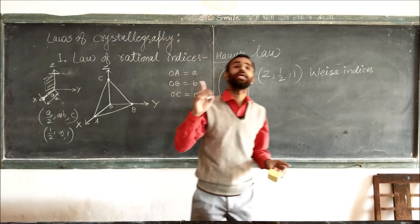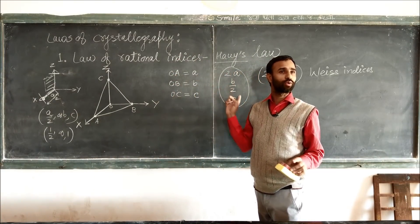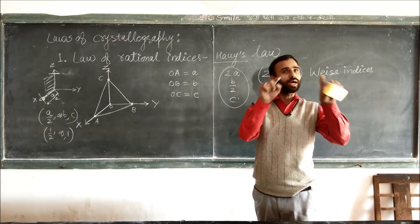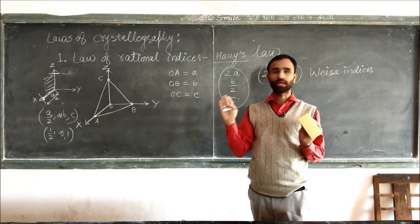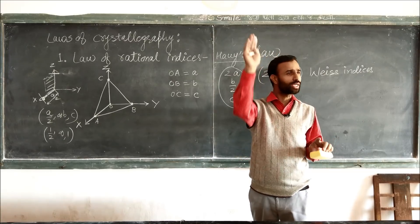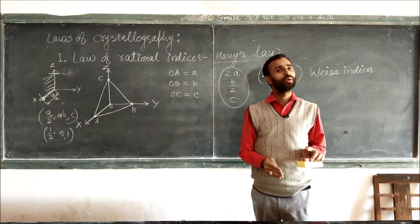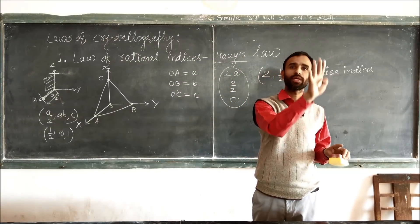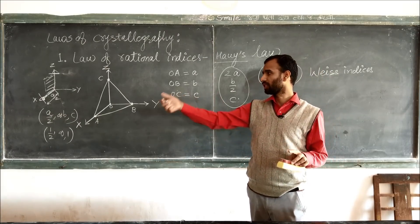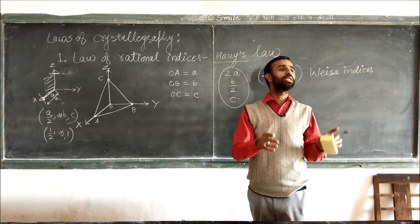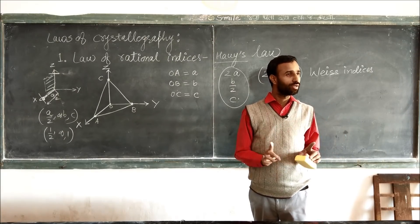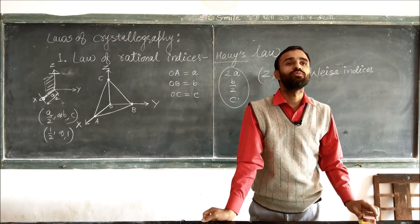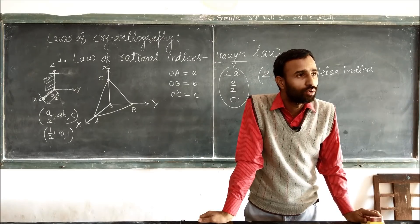Then we take into account Miller indices. Weiss indices are applicable only if the plane cuts all the axes. If the plane is parallel to any one axis — if it cannot cut a particular axis — then for that, Weiss indices are taken as infinity, meaning Weiss indices cannot be defined for that plane. So we take into account Miller indices. Miller indices are more authentic than Weiss indices.